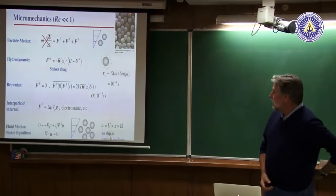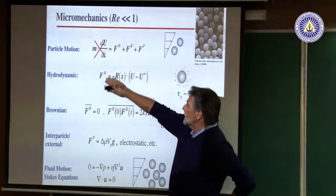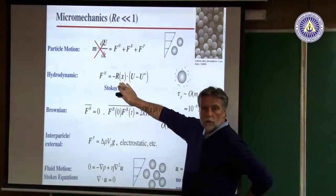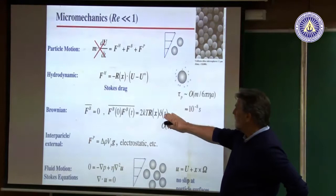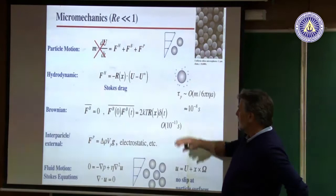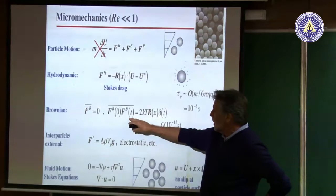Once we do that, the Reynolds number is small, so there's no acceleration — just a balance of forces. The hydrodynamic forces always take the form of a resistance tensor, which is a function of the geometry and velocities, giving us the force back. The thermal or Brownian forces have zero mean and are instantaneous in time because the timescale of the colloidal particle's motion is much longer than that of the solvent molecules. Solvents are about 10 to the minus 13 seconds; a colloidal particle of a micron is 10 to the minus 8 seconds — a separation of timescales. The correlation of the random forces is given by the thermal energy k_B T times the same drag coefficient.